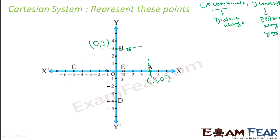For point C, the distance along the x-axis is minus 5. The y-coordinate is the distance along the y-axis from the x-axis, which is 0. So point C is minus 5 comma 0.